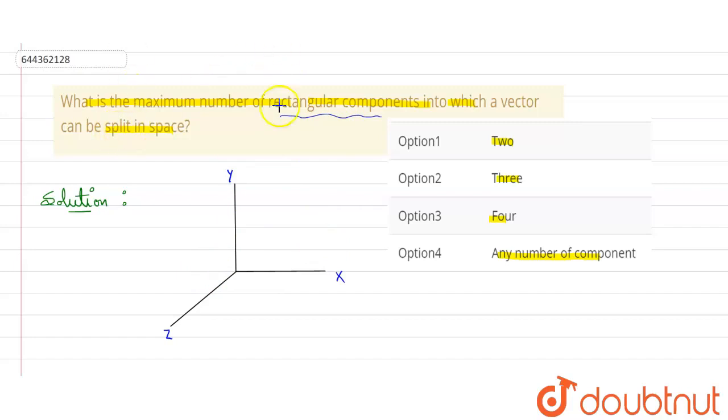If I represent a vector in this space, suppose like this, this is my vector and it is given in the question that it is vector A. This vector can be resolved in three components: one in x-axis, one for y-axis, and for z-axis also.